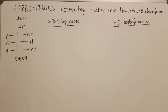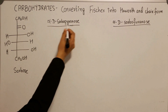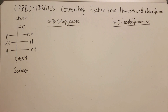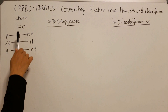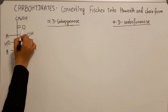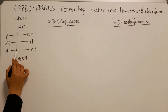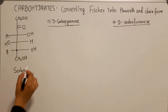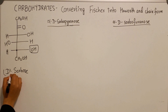Now you are ready to solve practice exam questions. For example, convert sorbose into alpha-D-sorbopyranose. First, determine what kind of sugar this is. There is a ketone functionality, making it a ketose sugar — treat this group like an aldehyde. The OH is on the right-hand side at the relevant carbon, so it is D-sorbose.